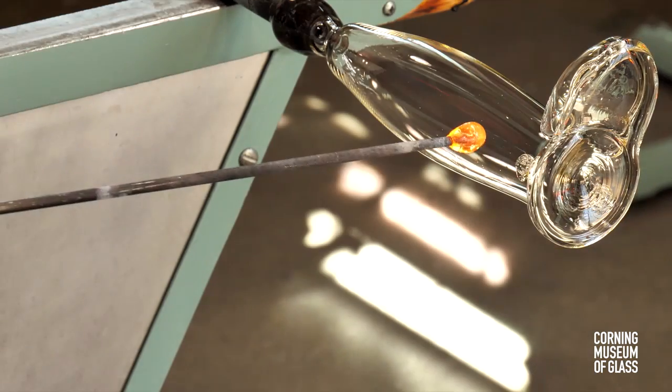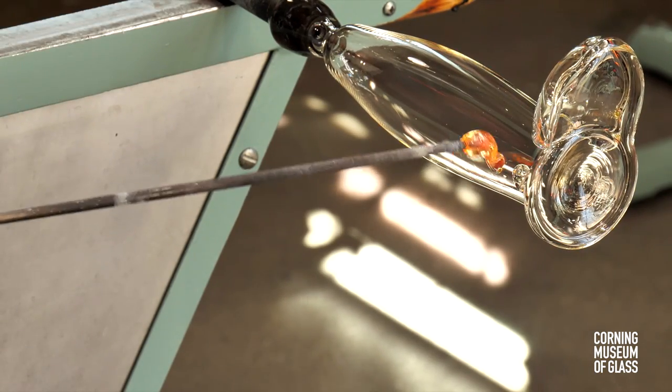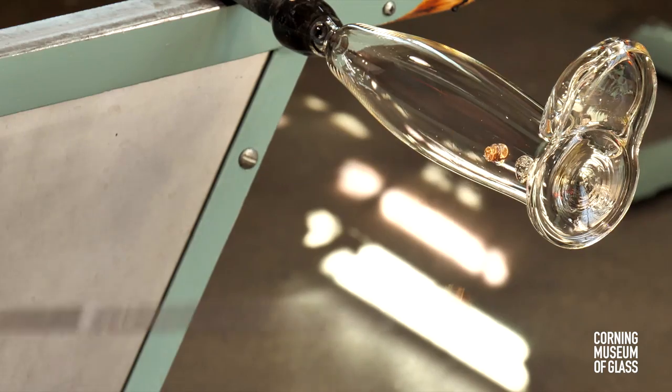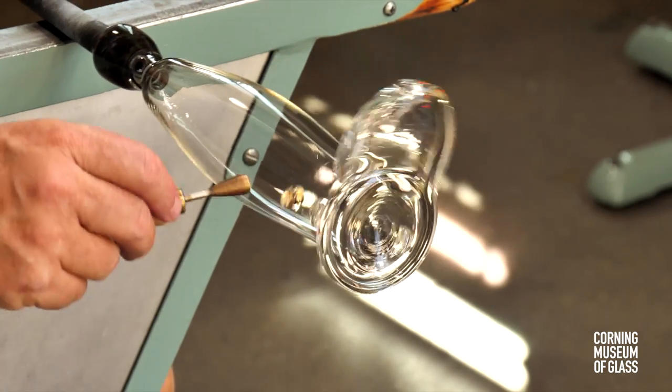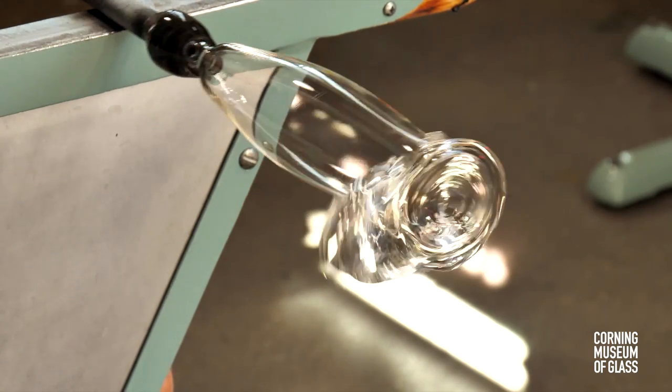The buttons are created by delivering a tiny gather of glass to the site, and pressing it with an embossing tool, and this creates a raspberry prunt.